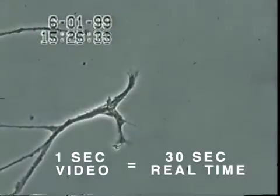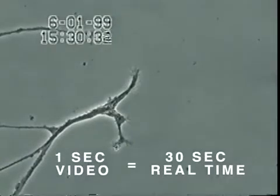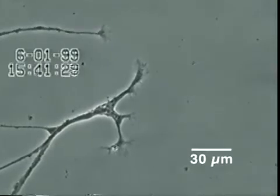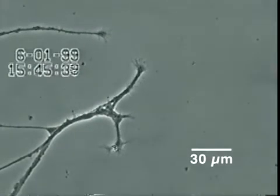In this experiment, neurons also isolated from snail brain tissue were grown in culture for several days, after which very low concentrations of mercury were added to the culture medium for 20 minutes.